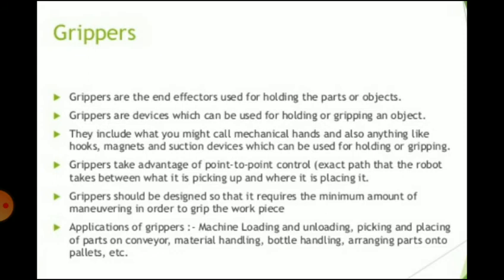Grippers are devices which hold objects by attaching through mechanical means such as magnets, suction cups, adhesives, hooks, etc. They are end effectors used for gripping an object, including mechanical hands and anything like hooks, magnets and suction devices. Grippers take advantage of point-to-point control — following an exact path between what the robot is picking up and where it is placing it.